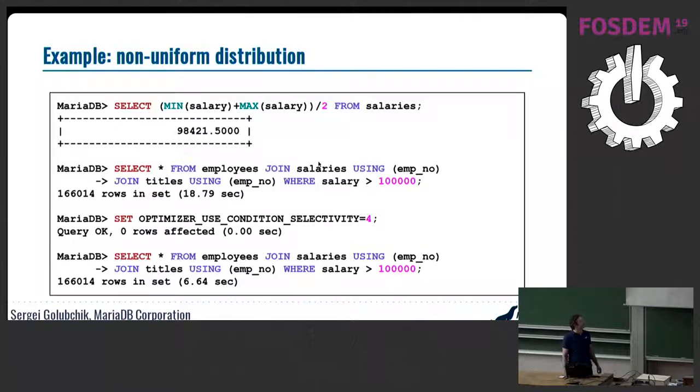Let's see how histograms are helping to optimize the queries. For this one, we need an example of some data with non-uniform distribution. Let's look at the salary values from the employees database. We calculate the midpoint of mid-salary that is exactly in the middle between minimal and maximal salary. Let's say it's about 100,000. Now let's select all the employees and their titles from the salary table where the salary was above the midpoint, above the 100,000. After churning some data, MariaDB returns a result in 18 seconds, 19 seconds. But if we enable the use of histograms by setting optimizer_use_condition_selectivity equals 4, we'll get the same result three times faster.